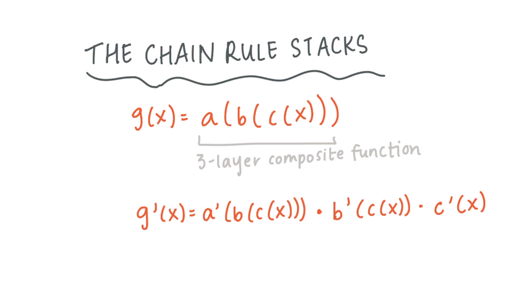In general, you start by taking the derivative of the outermost function and continuously multiplying by the derivative of the inner functions until you reach the innermost of the composite functions. In machine learning, the chain rule is really important for doing quick calculations on neural networks with lots of layers, which are basically just lots of composite functions.